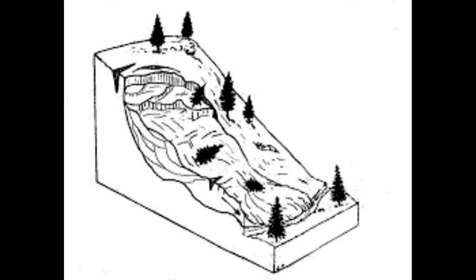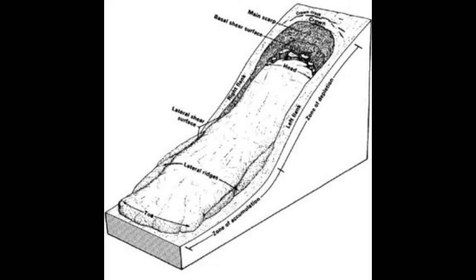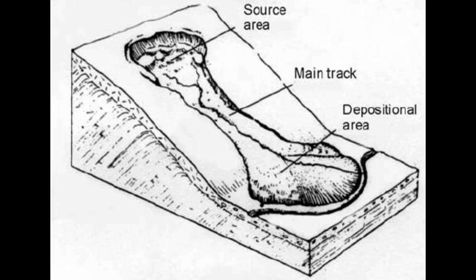To minimize the risk of earthflows, it is important to avoid building structures on or near slopes, to stabilize slopes using retaining walls or other measures, and to monitor slopes for signs of instability such as cracking, tilting, or bulging. Early warning systems can also be put in place to alert people living in areas at risk of earthflows. By taking these precautions, it is possible to reduce the likelihood of earthflows and their associated impacts, ensuring the safety of those living in or near areas prone to this type of landslide.